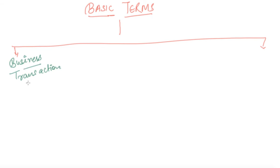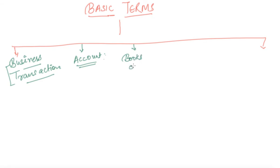Business transactions basically do not affect any of your accounts, but still without business transactions no accounting can take place. Secondly, account — you must be aware of what account means while doing accounting. Next, books of account — what do we mean by books of account? Obviously, while preparing accounts, we must know what we mean by books of accounts and in which account one entry should be placed.